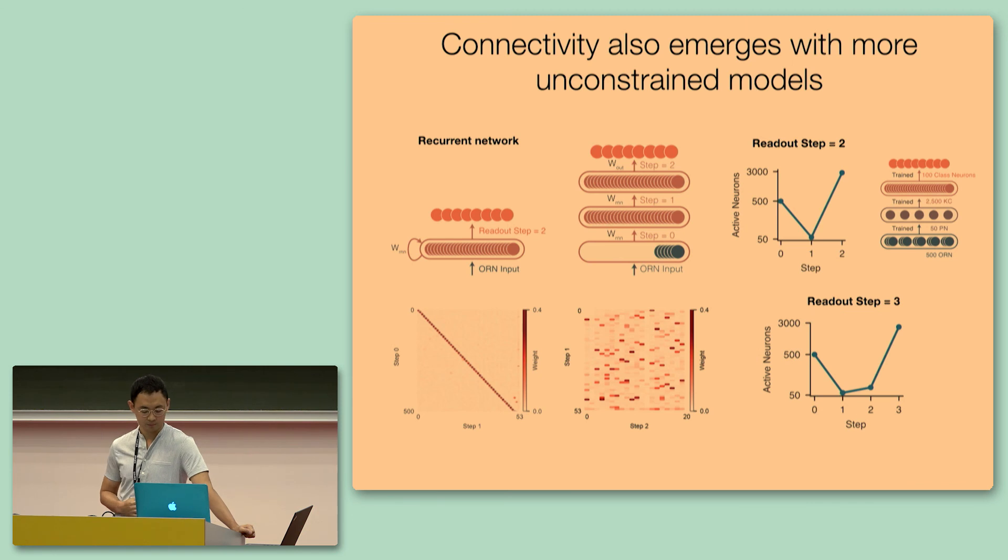What if we endow the network with more steps of computation? If we take the classification readout at a further time step of three. Rather than using this additional layer of computation, this network simply copies the neural activity that is present in step one onto step two. Because you see that the active neurons is about 50 at both time steps, and actually the connectivity matrix is close to an identity matrix as well. So this says to us that even if we endow the network with more room for additional computation, it actually does not choose to use it. The optimal solution really does appear to be a three-layer network with 50 neurons in the first layer and a lot of neurons in the expansion layer.